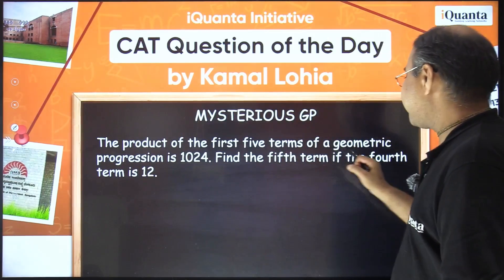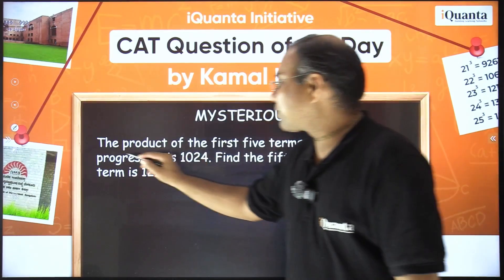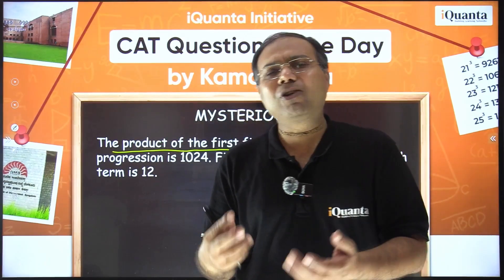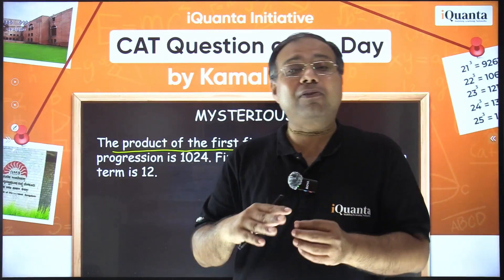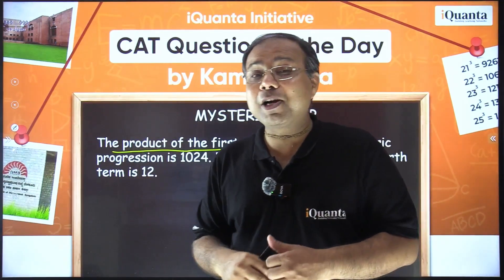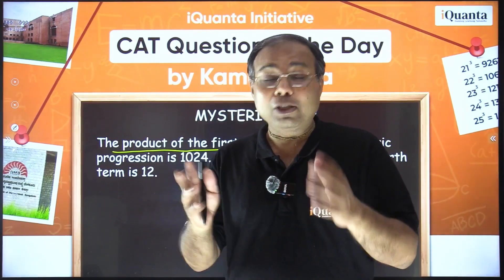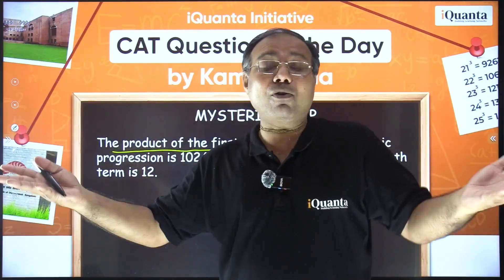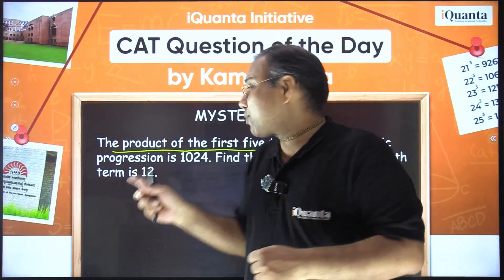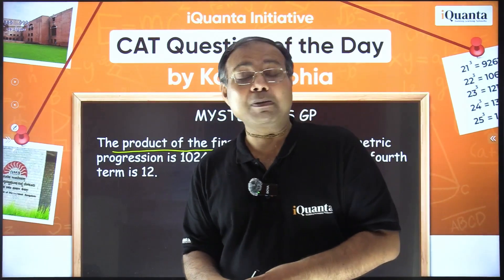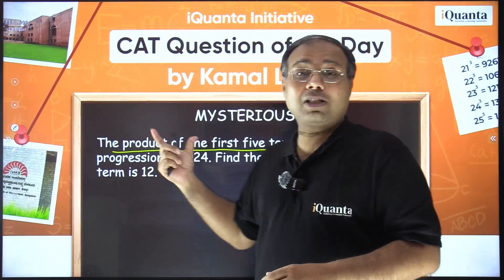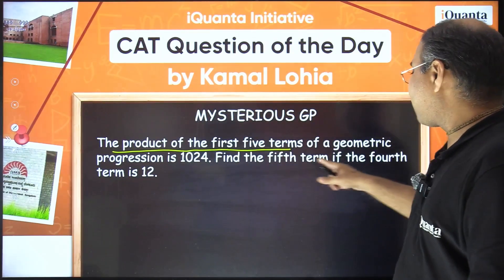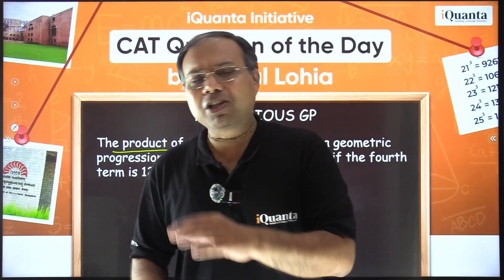Now let's read it together. It says: the product of the first five terms of a geometric progression is 1024. Normally we're taught about the sum of terms in a GP. But here it's talking about the product. The question asks: find the fifth term if the fourth term is 12. This question is very simple if you understand the concept of the product of terms in a GP.